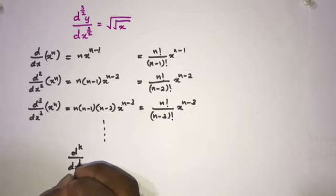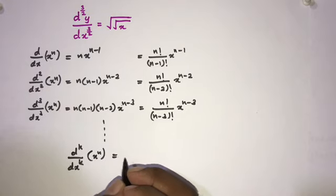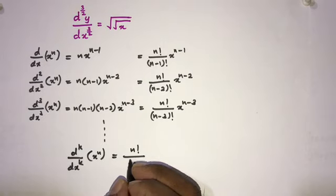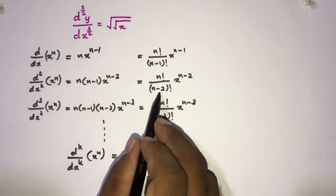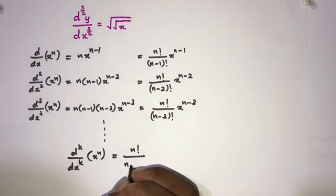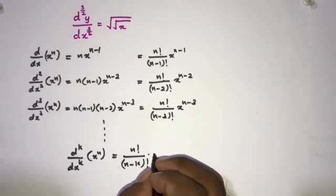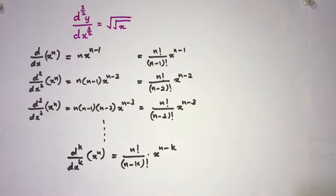According to this pattern, we can generalize to the kth derivative: d^k/dx^k (x^n) = n!/(n-k)! · x^(n-k).